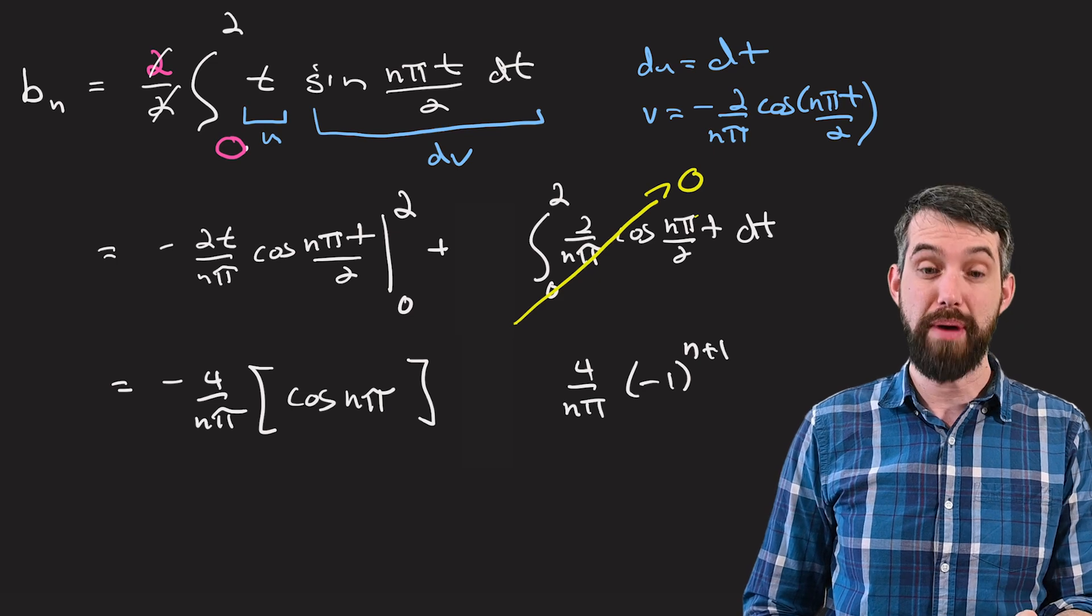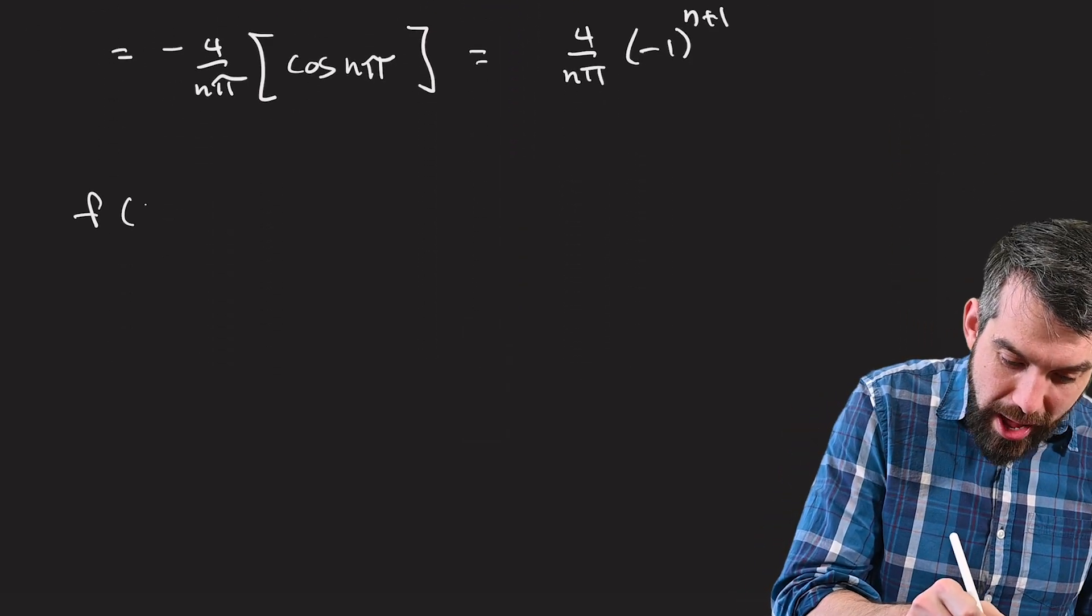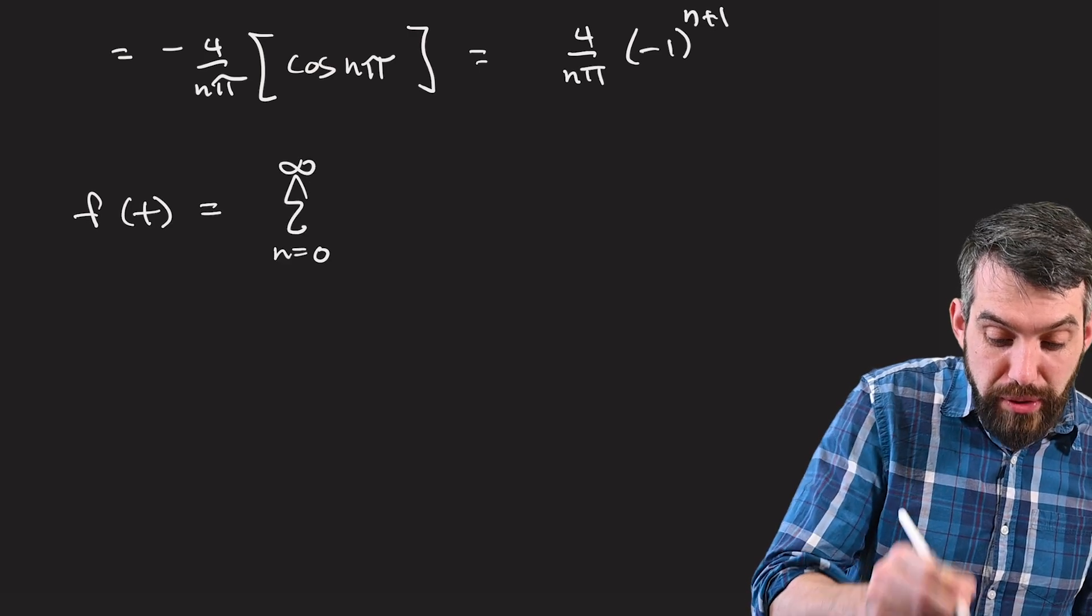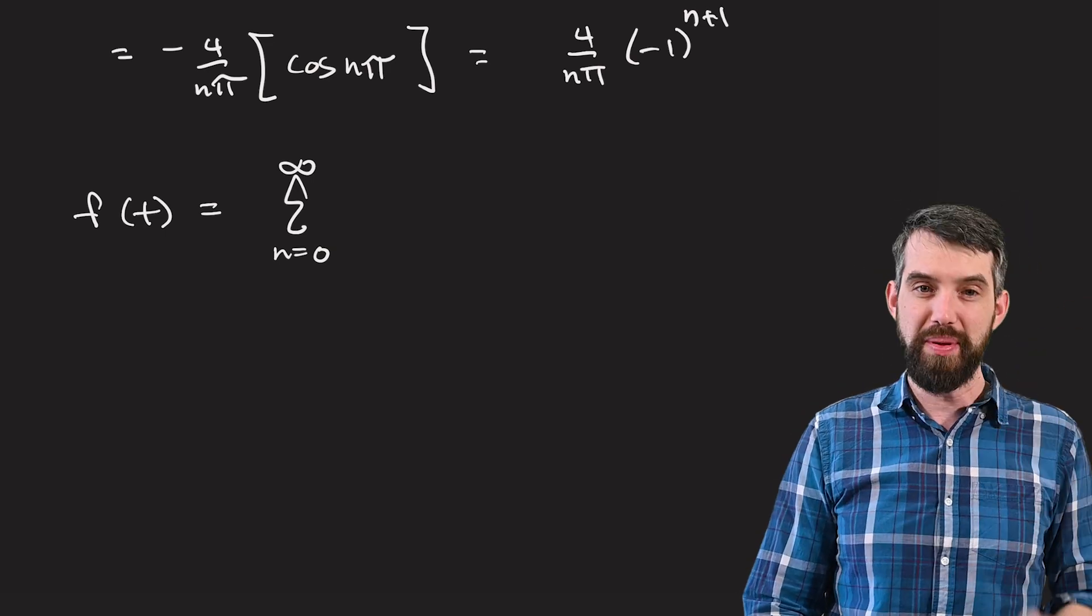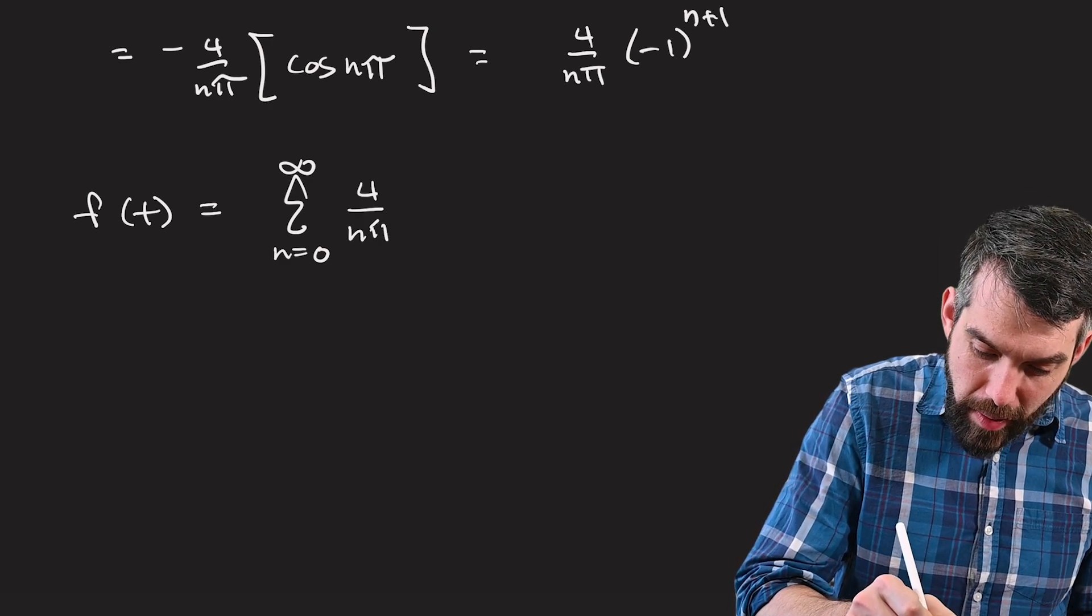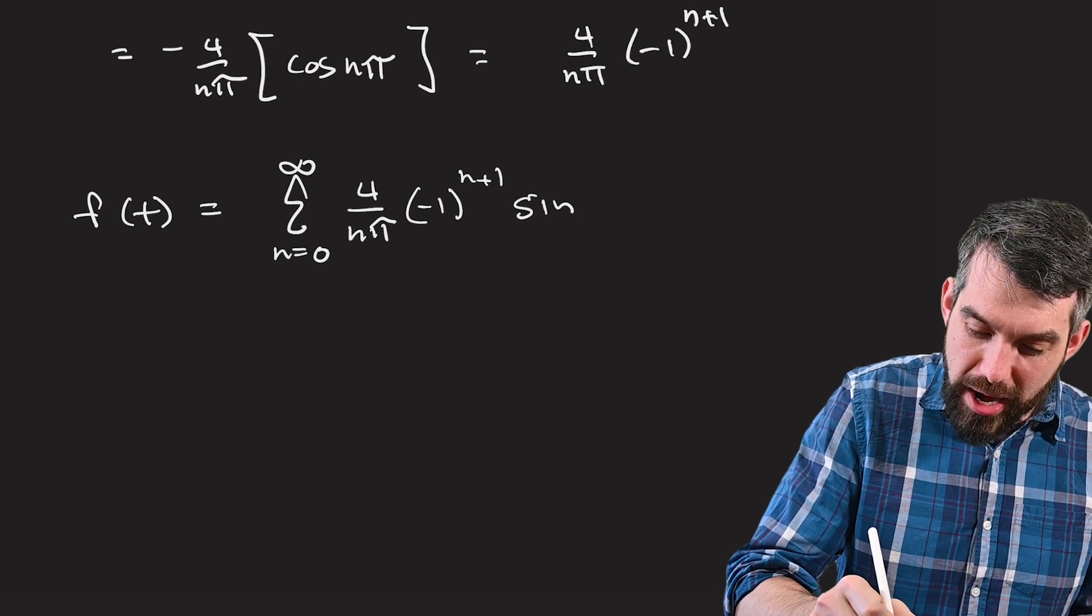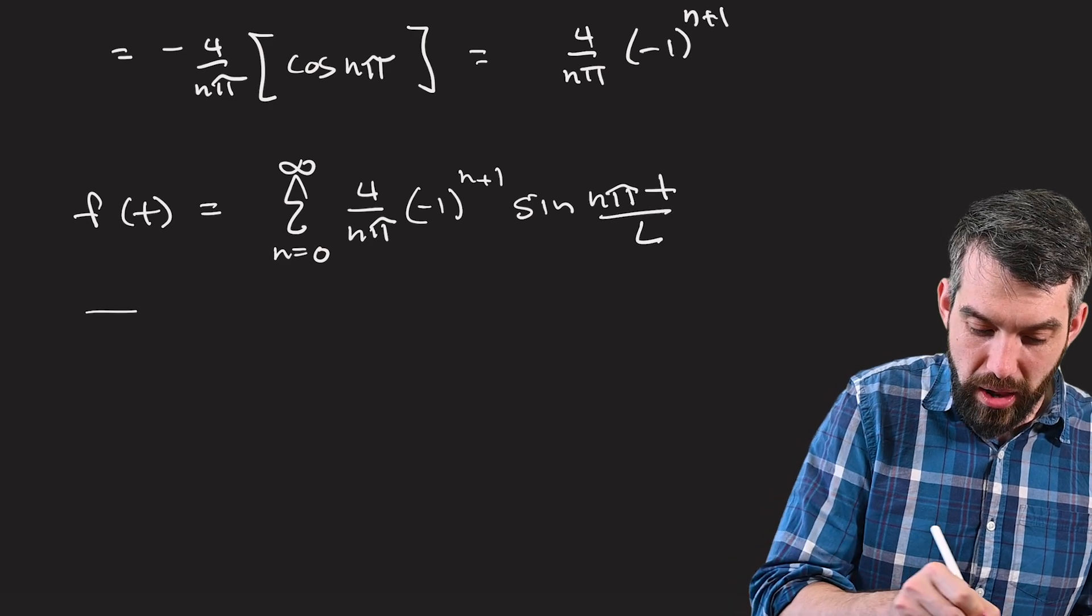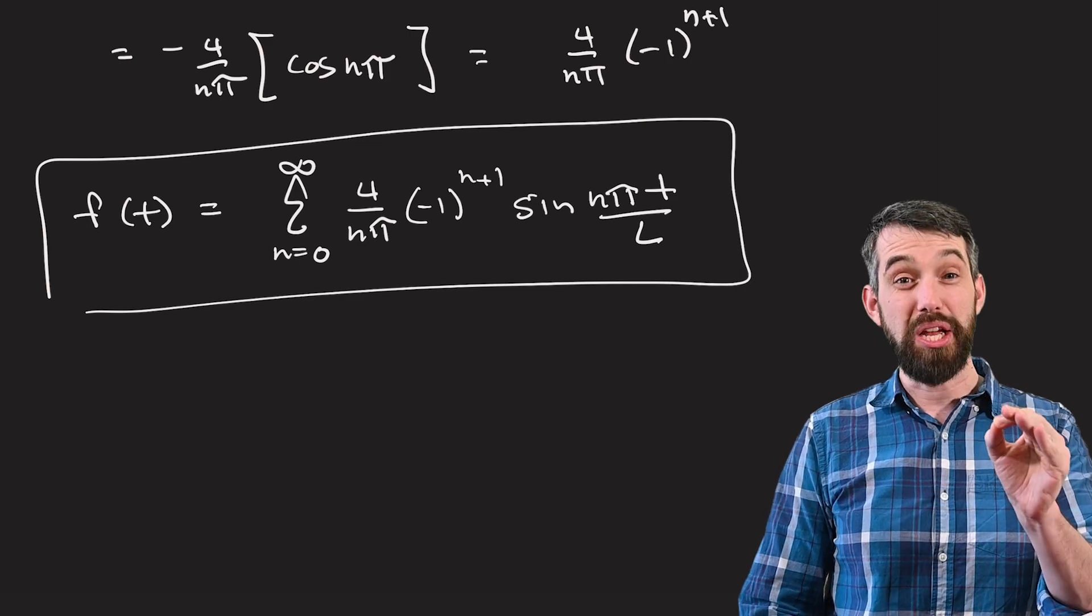And now I'm ready to state my final answer. So this is my formula for the b_n. So what is my f(t)? My f(t) is a sum. It only is going to include these sine terms. There is no a_0 term. There is no a_n terms. There's only b_n terms. And so what do I have? 4 divided by n pi times minus 1 to the power of n plus 1, all multiplied by sine of n pi t divided by l. Well, that is my final answer for the Fourier series of this particular sawtooth wave.